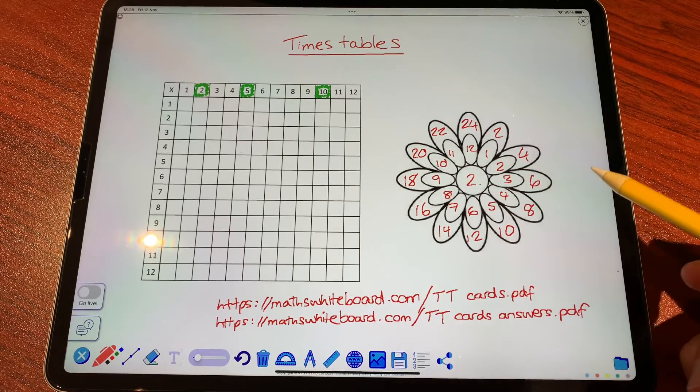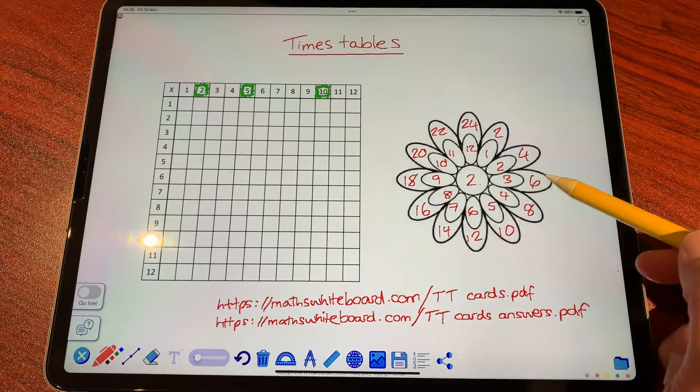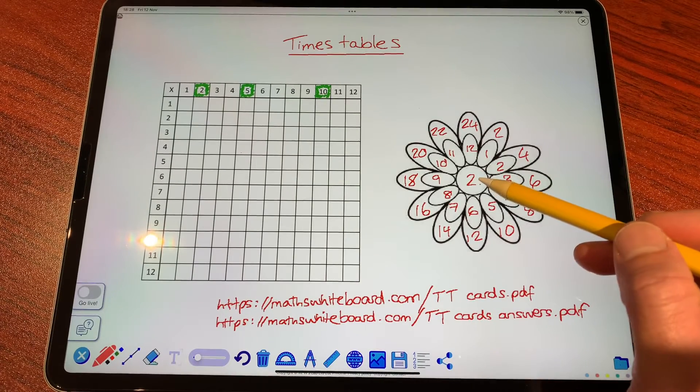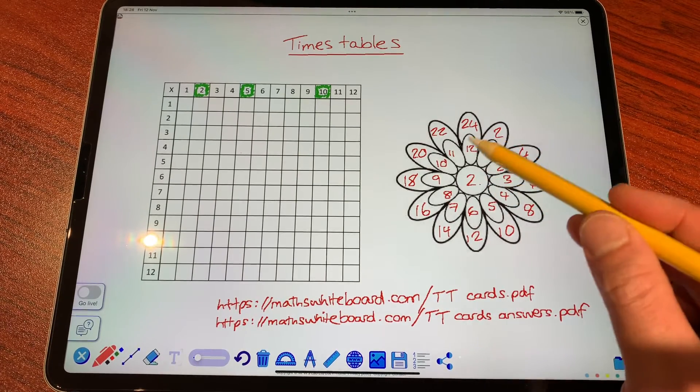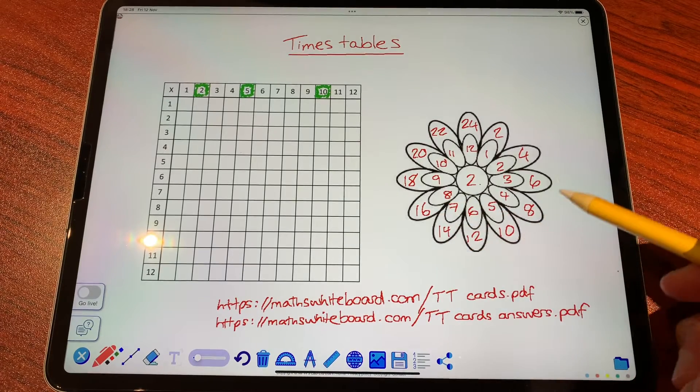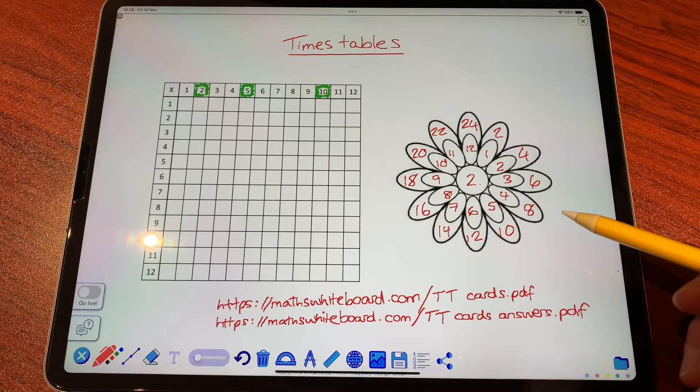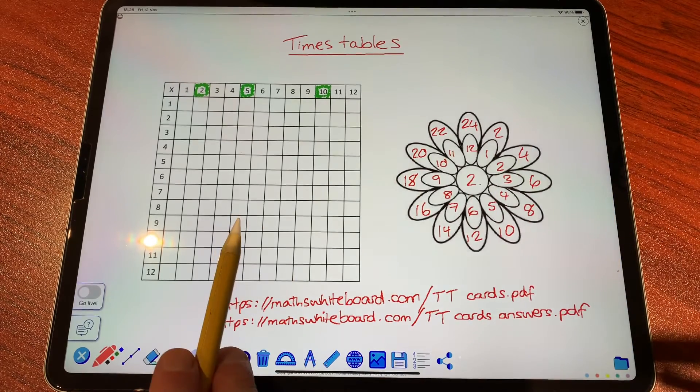Make sure that when you're reciting, you do both the forward problem and the backwards one as well. The Waldorf multiplication flower is one strategy for you learning times tables. The multiplication grid is as well.